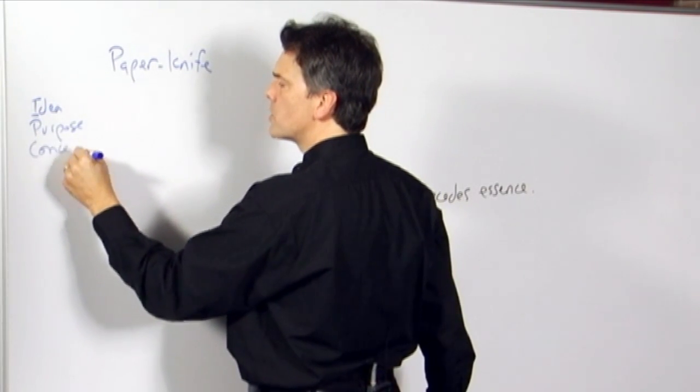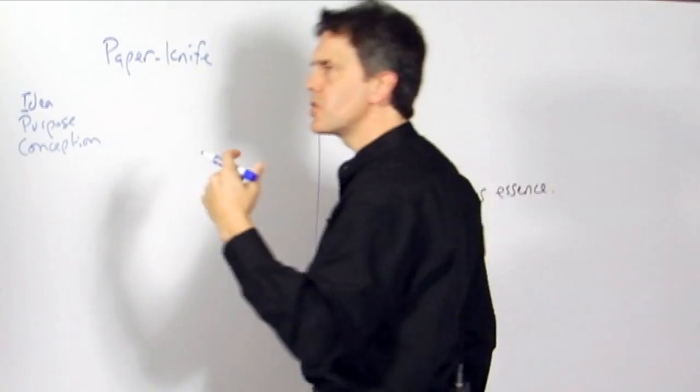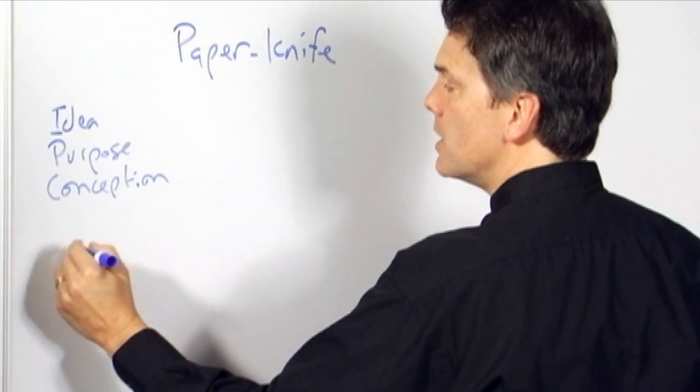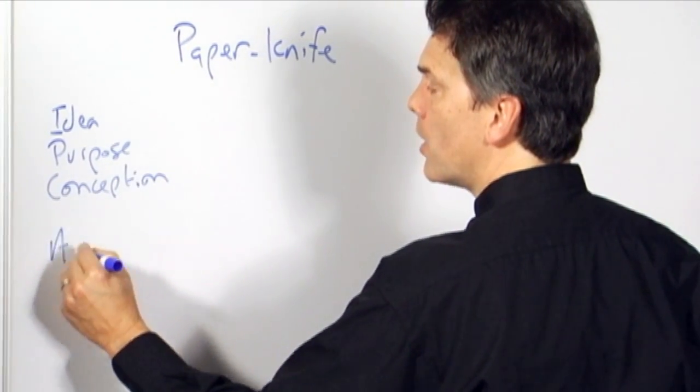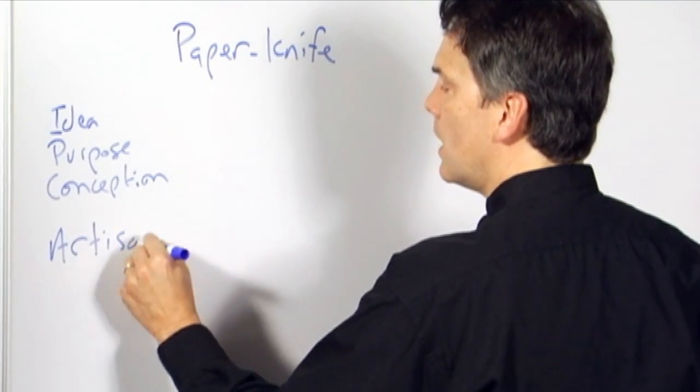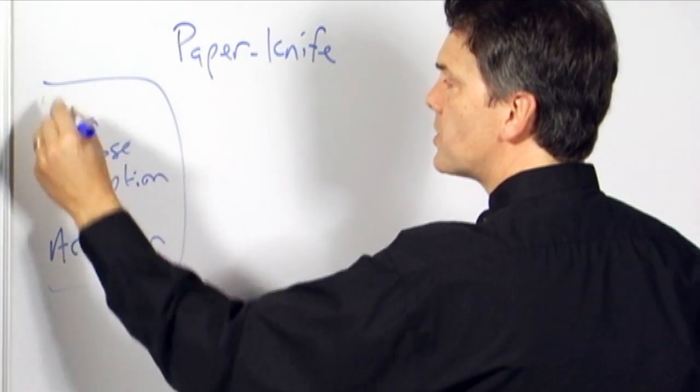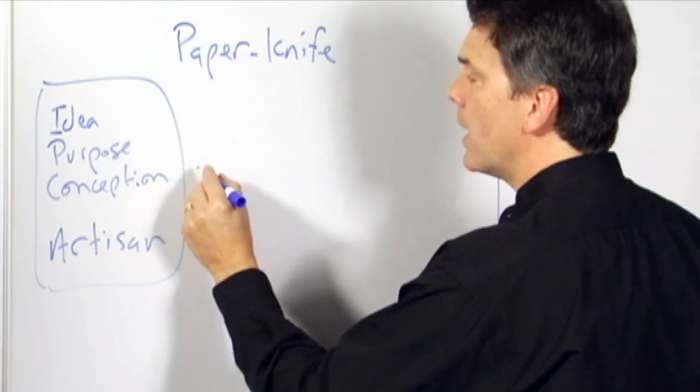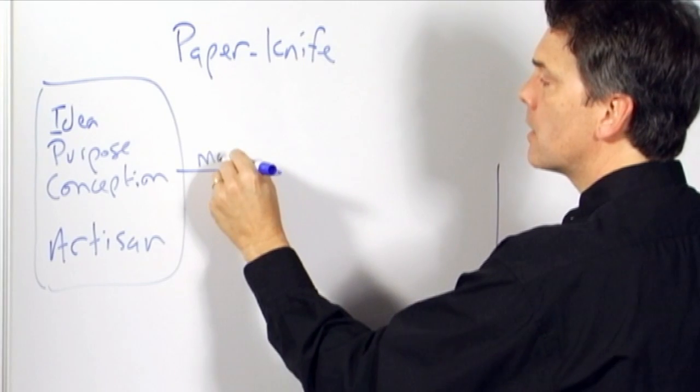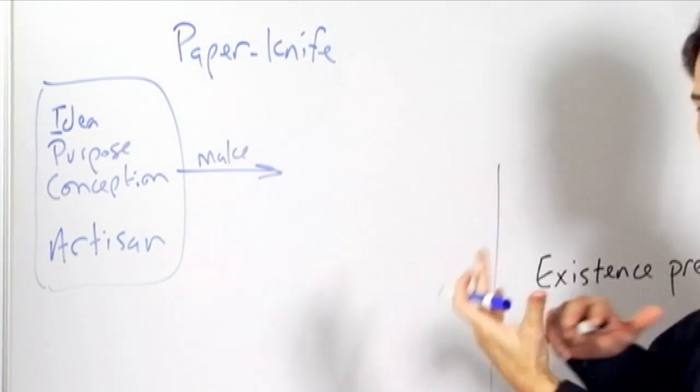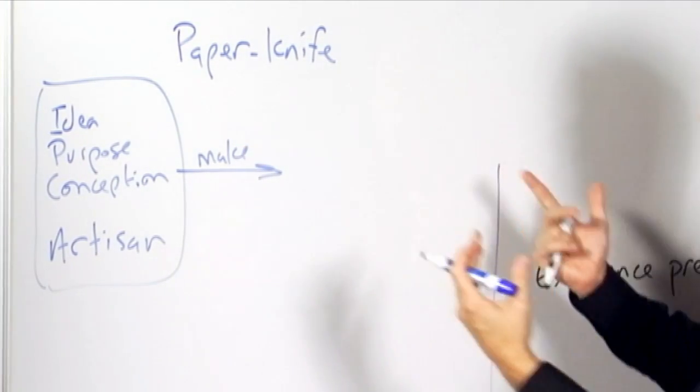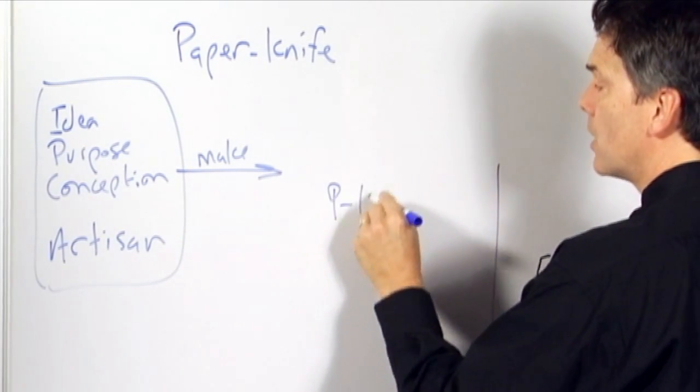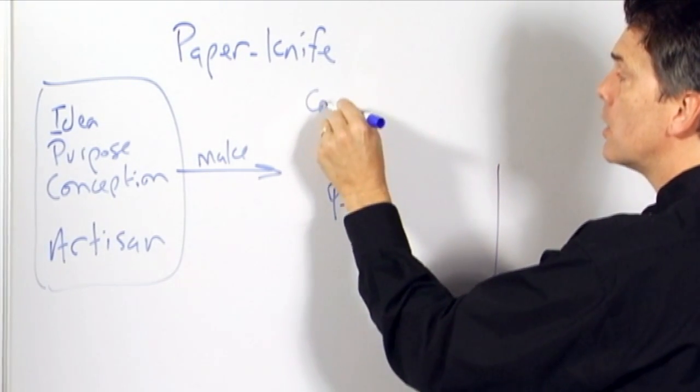And so then there is, as a result of that, some sort of a conception of something which, if it exists, would be able to do so. And all of this is in the mind of an artisan. And the artisan then takes his idea, his purpose, his conception, and then figures out how to go ahead and make some sort of method of production, an actual paper knife. And so what then happens is the paper knife comes into existence.